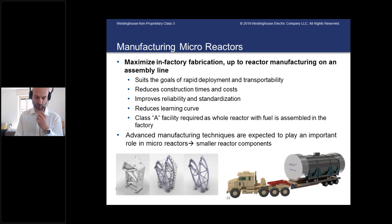Something to point out is that sometimes microreactor developers express the desire to fuel the reactor in the factory and then ship it assembled to the site. In this case, criticality prevention needs to occur in the factory, which effectively becomes a Class A facility with related challenges. Advanced manufacturing techniques, which are promising in general for reactors, are expected to play an even more important role for microreactors in making smaller reactor components.